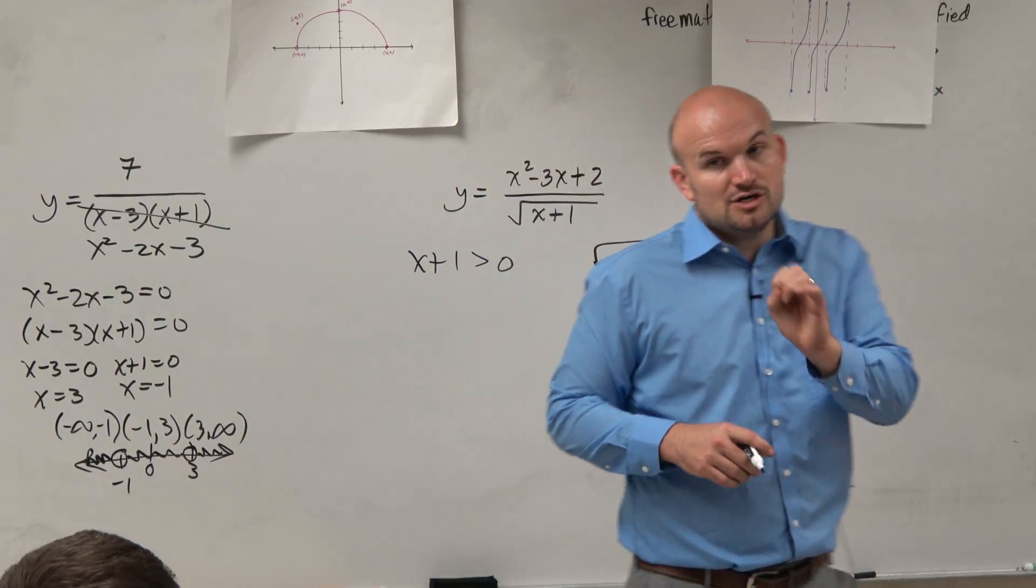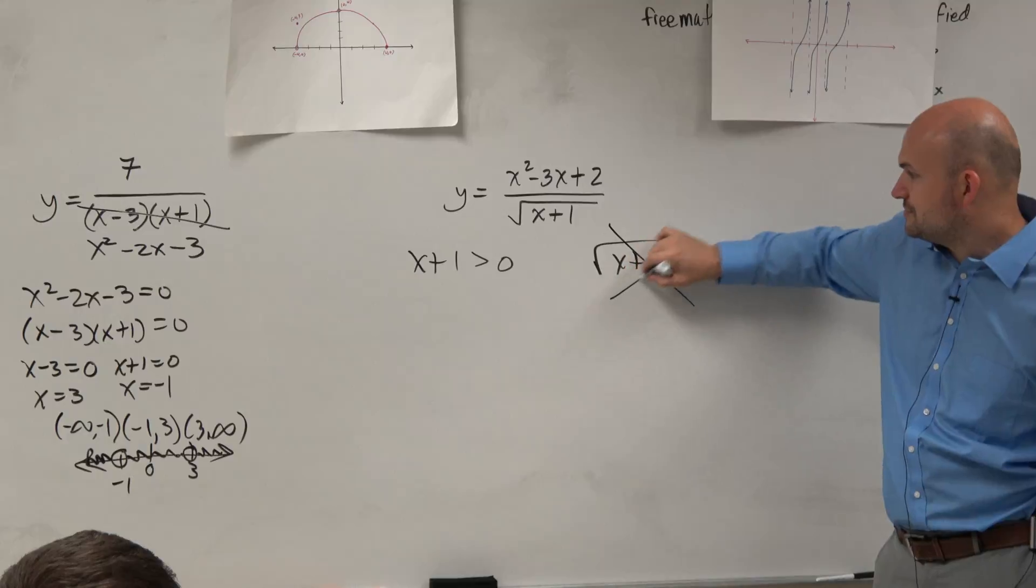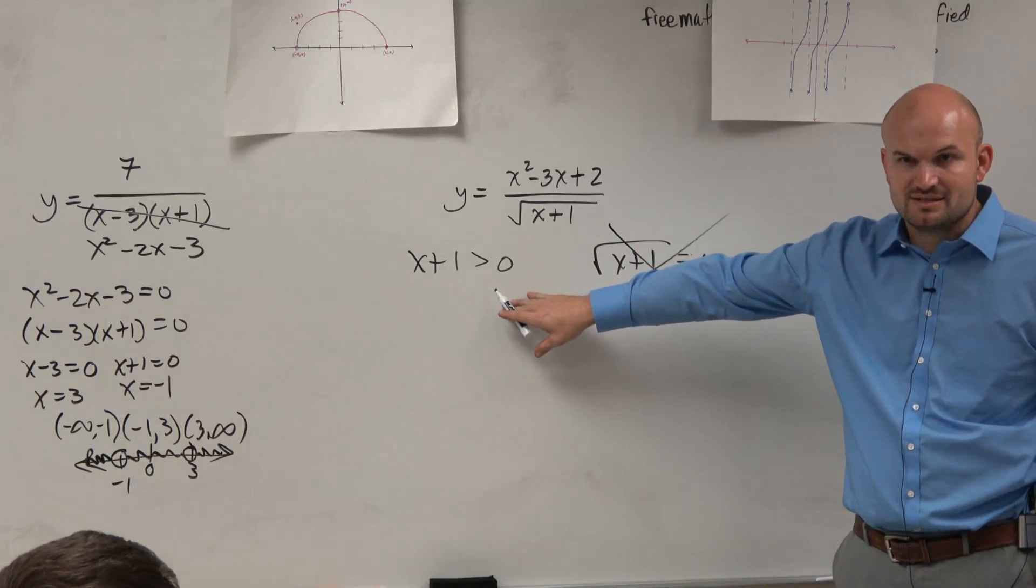So if we just take this away and just say we only want it to be for numbers that are larger than 0, then we don't need to worry about the values that make it 0. We can just solve this.